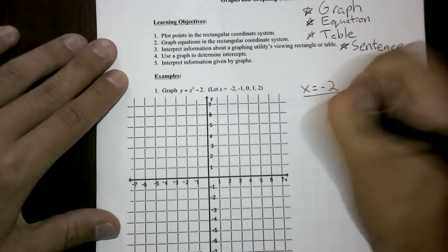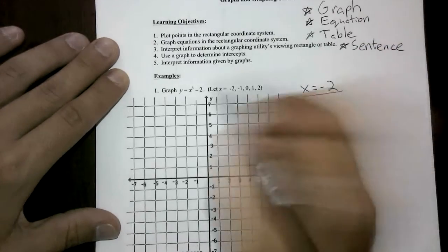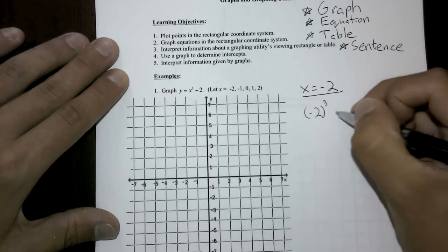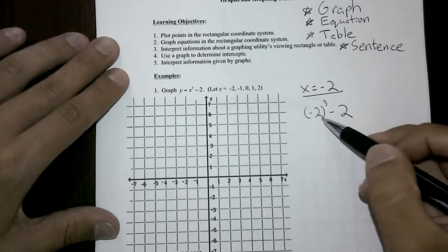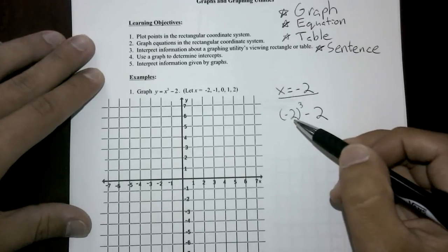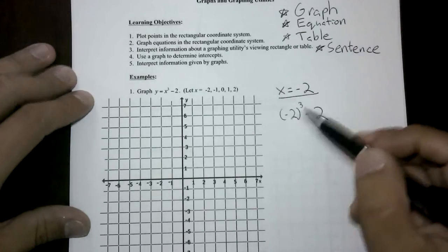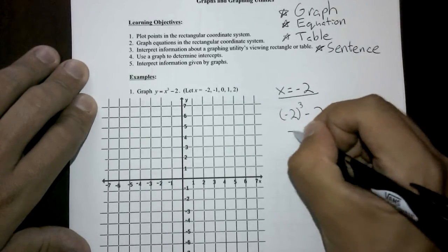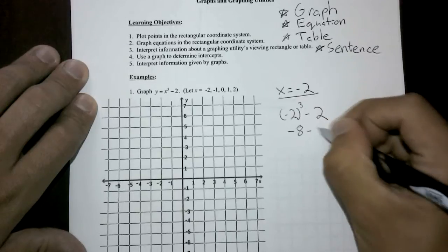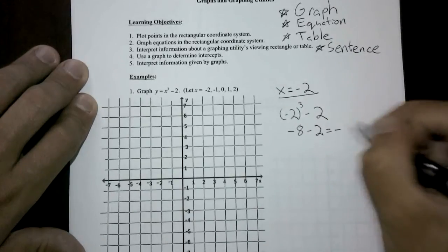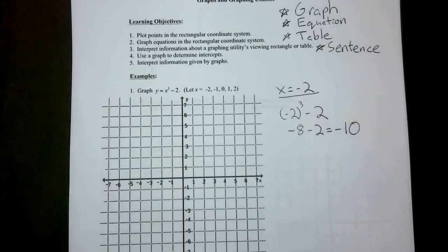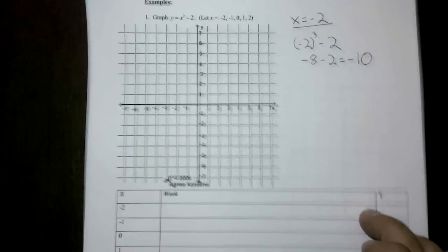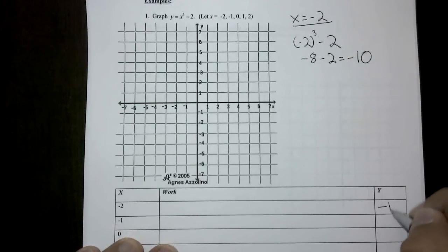If x is -2, we're taking this -2 and plugging it in for x. Keeping in mind that we're cubing this term, I use parentheses because I'm cubing a negative term. If I evaluate this, -2 cubed, -2 times -2 times -2 gets me -8. Deducting 2 towards the end gets us -10. So we already have one of these values, and the outcome here is -10.